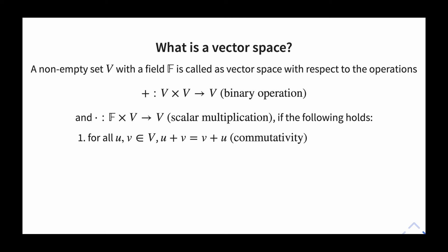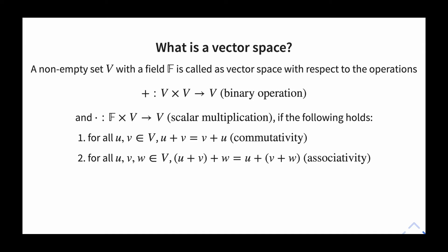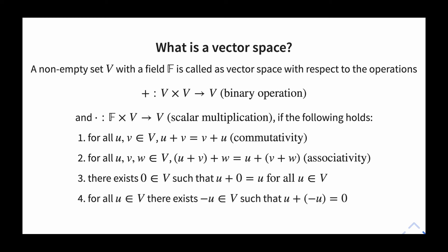These two operations must satisfy eight properties. The first is the commutative property: u + v = v + u for every u, v in V. The second is the associative property: (u + v) + w = u + (v + w). The third is the existence of an identity element zero in V such that u + 0 = u. The fourth is the inverse property: for every u in V there exists -u in V such that u + (-u) = 0.